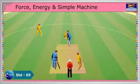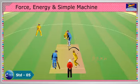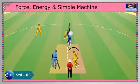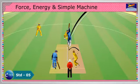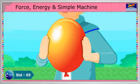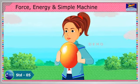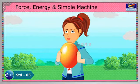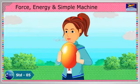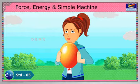So, force is a push or pull on an object. A force can cause an object to accelerate, slow down, remain in place, or change shape. What happens when you push a balloon with your hand? The shape of the balloon changes. So, force can change the shape of an object.